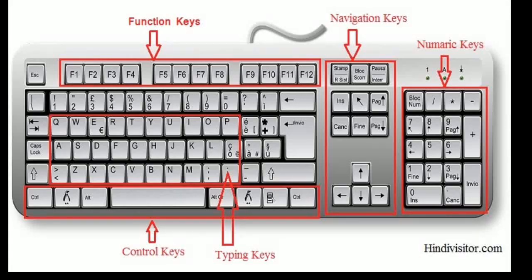Seventh are function keys. See the top of the keyboard — F1, F2, F3, F4, F5, F6, F7, F8, F9, F10, F11, F12 — these are the function keys used for some special commands. The eighth type is special keys — see the picture of the keyboard for reference.